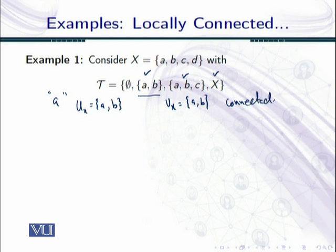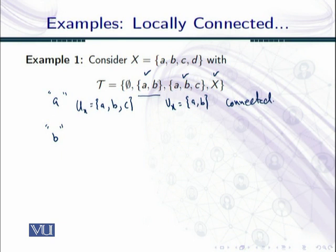Similarly, if I take the next open set, the corresponding V will remain the same — it does not need to change, since {a,b,c} is itself connected, so V can also be chosen accordingly. Corresponding to b, the choices are again the same: {a,b}, {a,b,c}, and x.